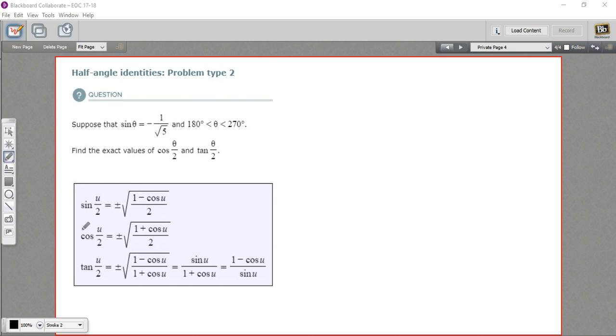So this is a perfect time to use these half-angle identities. The thing we need for the half-angle identities for every one of these is the value of the cosine. So we're going to have to figure out the cosine from the information we've been given here. And that's probably not too hard. Let's see if we can figure out cosine theta.